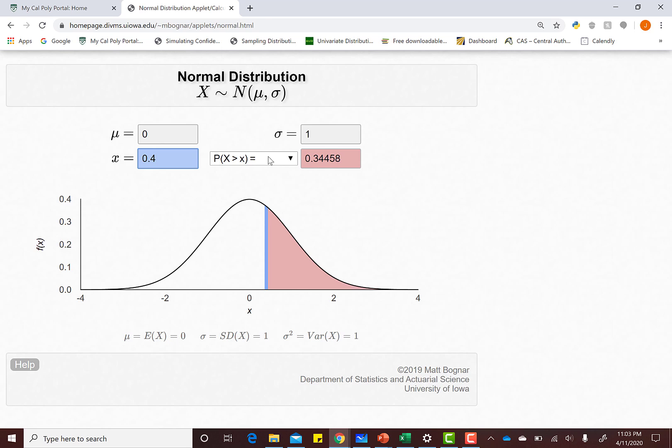If we wanted to find the area less than, well, we can hit less than. If we wanted the outside area, this is giving us the probability of being greater than 0.4 or less than negative 0.4.